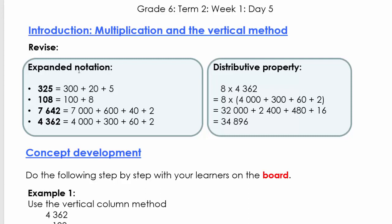Let's quickly go and we're first going to start with some revision. The first one is where we write numbers in expanded notation. So 325 is 300 + 20 + 5. 108 is 100 + 8. 7,642 is 7,000 + 600 + 40 + 2.